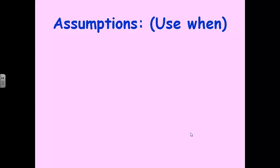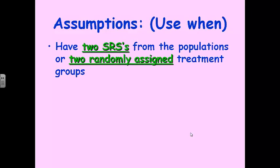Moving on to our inference procedures — our good old friend, the assumptions. We can use these inference procedures, either confidence intervals or hypothesis tests, when we have two simple random samples from the populations or two randomly assigned treatment groups. A lot of people get locked in on SRSs and on the test always write SRS for everything, even when it's not an SRS. If it's an experiment, then it's not an SRS — it's two randomly assigned treatment groups. You have to distinguish between an experiment with treatments versus a simple random sample.